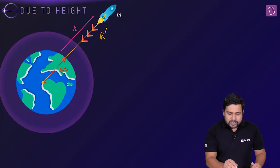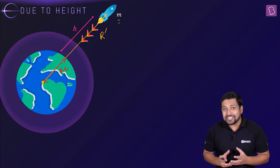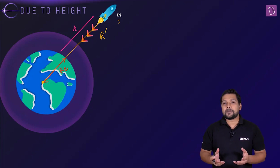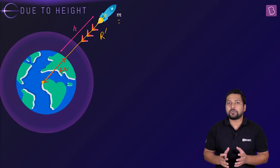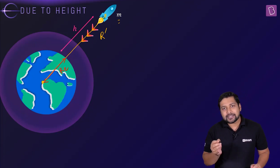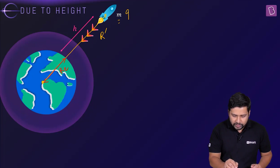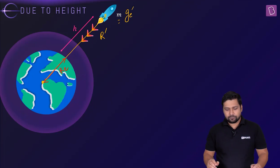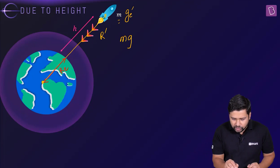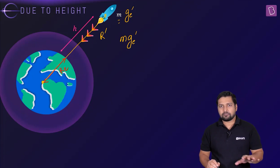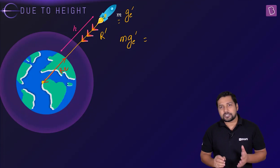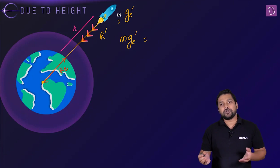The mass of this body is small m. The acceleration it experiences at this height will be some value different from the surface, because it is not at the surface. Let us say the value of acceleration due to gravity at this point is g_e_dash. The force on the body can be written as m times g_e_dash — force equals mass times acceleration.